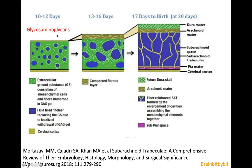The endomeninges is filled with a ground substance made up of glycosaminoglycans or mucopolysaccharides. Holes appear in this ground substance due to its withdrawal and probably also because of skull growth. These holes become larger and larger, eventually leading to the formation of the subarachnoid space, with trabeculae made up of remnants of this ground substance with some fenestrations in it.